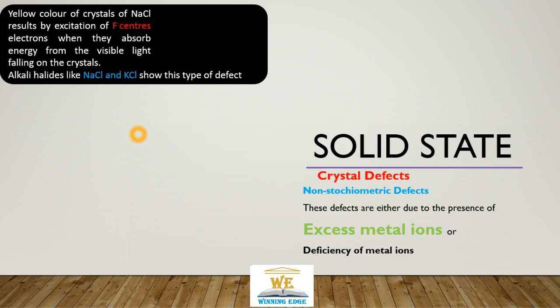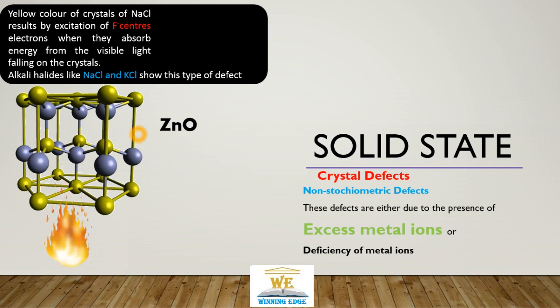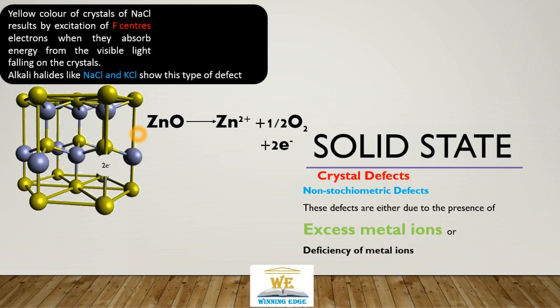Another example of excess metal defect (non-stoichiometric) is zinc oxide. If we heat zinc oxide too much, the zinc crystal loses a few oxygen atoms, leaving behind two electrons. Oxygen will go, but the electrons remain. So we have zinc ions and two electrons occupying the position of the oxygen — this is another example of excess metal, because zinc is in excess here.